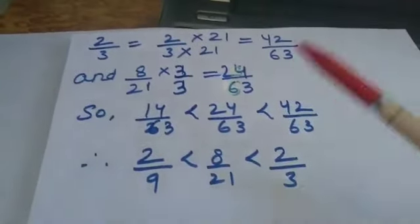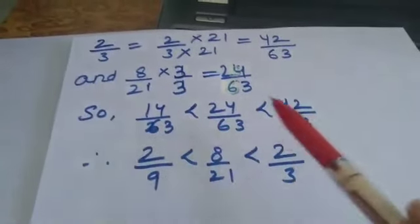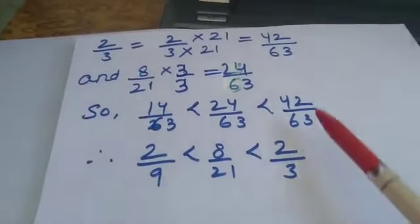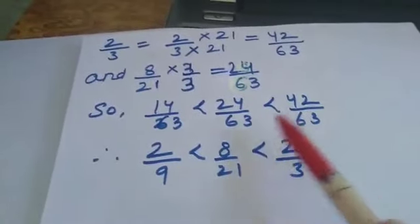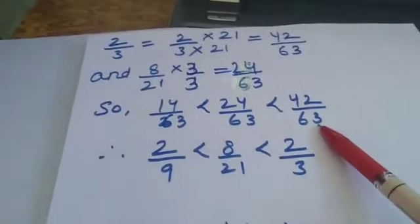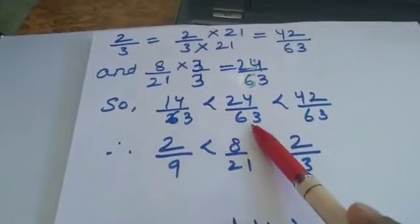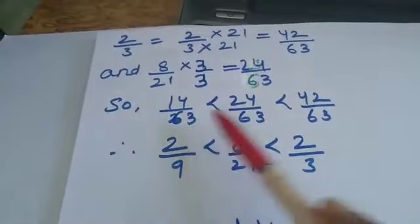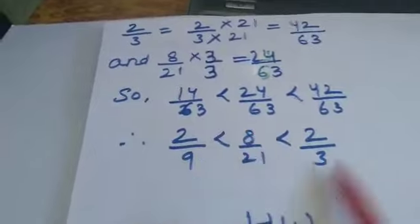Now arrange the fractions by comparing numerators. The smallest numerator is 14, then 24, then 42 — which is the largest. After making the denominators the same, the bigger the numerator, the bigger the number. So the largest fraction is 42 by 63 (which is 2 by 3), and the smallest is 14 by 63 (which is 2 by 9).